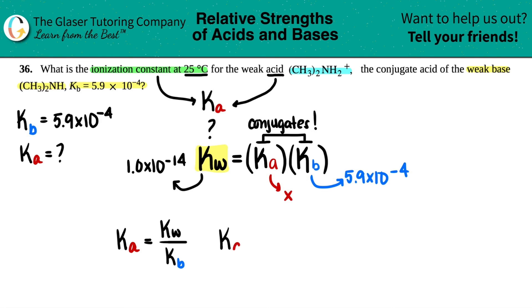So let's see. Ka equals something over something. Kw was 1.0 times 10 to the negative 14th, and the Kb is 5.9 times 10 to the negative 4th.